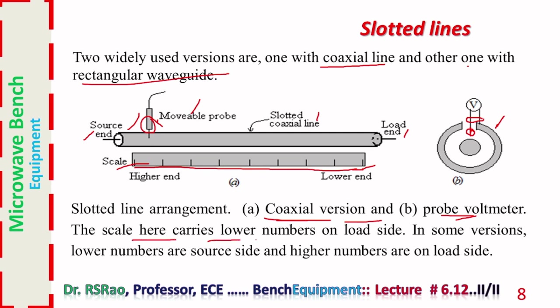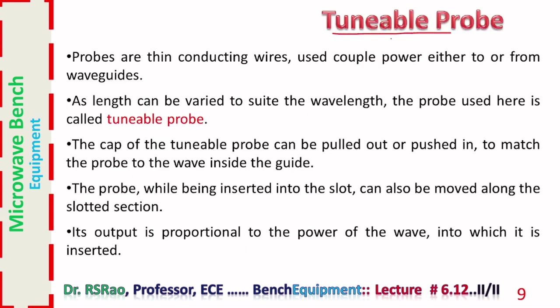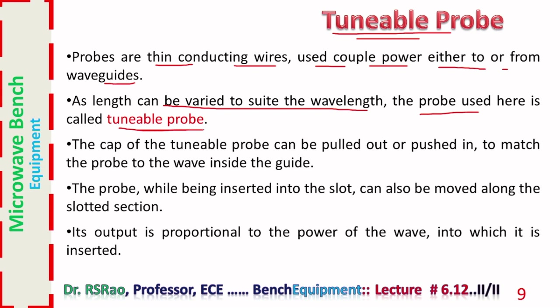Usually the sensor is a square law device. The scale carries lower numbers on the load side; in some versions lower numbers are on the source side. A few words regarding the tunable probe: it is the probe that moves along the length of the slotted section. Probes are thin conducting wires used to couple power either to or from the waveguides. As the length can be varied to suit the wavelength, the probe used here is called a tunable probe.